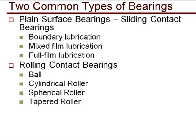There are two common types of bearings, plain or sliding contact and rolling contact bearings. Plain bearings operate in one of three different modes: boundary, mixed film, or full film lubrication. There is also magnetic and air bearings that we won't discuss here.